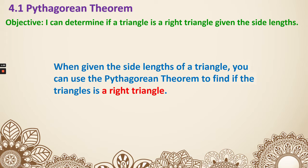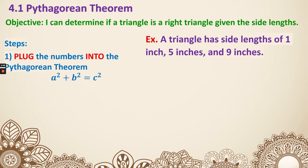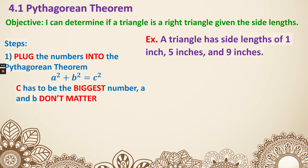When given the side lengths of a triangle, you can use the Pythagorean theorem to find if the triangle is a right triangle. Let's have a look at some steps and examples. First, you are going to need to plug the numbers into the Pythagorean theorem, and the key is C has to be the biggest number.